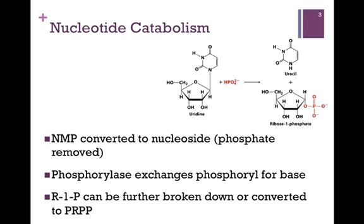In another type of processing, we can convert a nucleotide to a nucleoside by removing the phosphates. Here we have converted UMP to the nucleoside uridine. We can then use the action of a phosphorylase to phosphorylate the ribose and at the same time release the base — in this case, uracil. In this process we formed ribose-1-phosphate, which can be further broken down, or we can use it to build the molecule PRPP, the sugar base on which we build our nucleotides in the biosynthetic pathways.